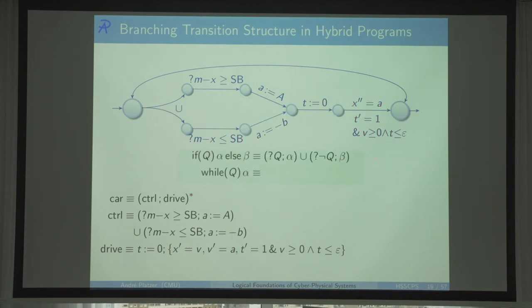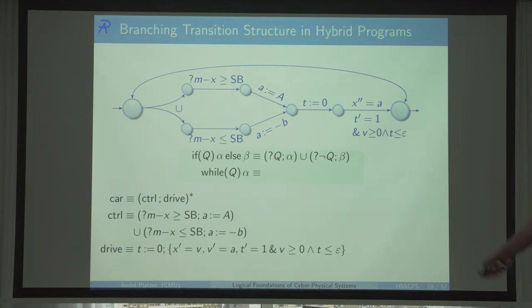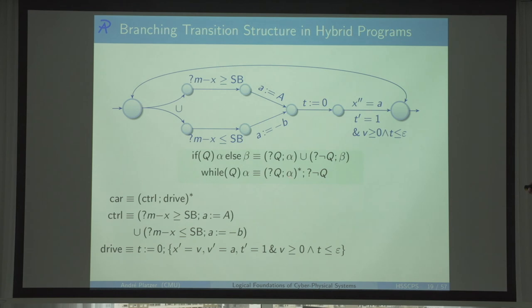The if-else is now properly defined: if q then alpha else beta equals a non-deterministic choice where the first branch starts with test ?q then alpha, and the second starts with test ?(¬q) then beta. While loops follow naturally: they're a non-deterministic repetition where first you need to survive the test that q is true and then do alpha. The loop can repeat only when q is true; otherwise it can't. Anything else you want, just define it as needed — it's a piece of cake.